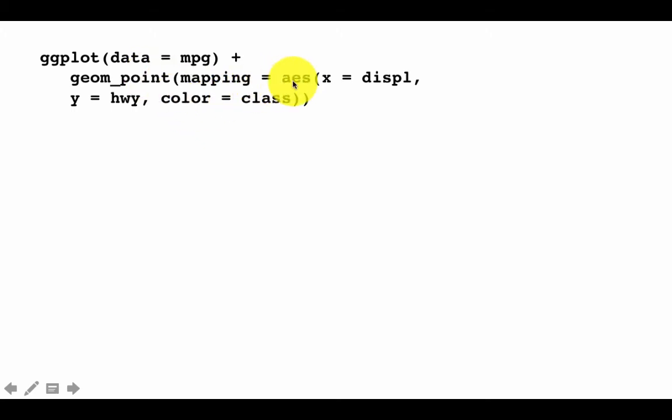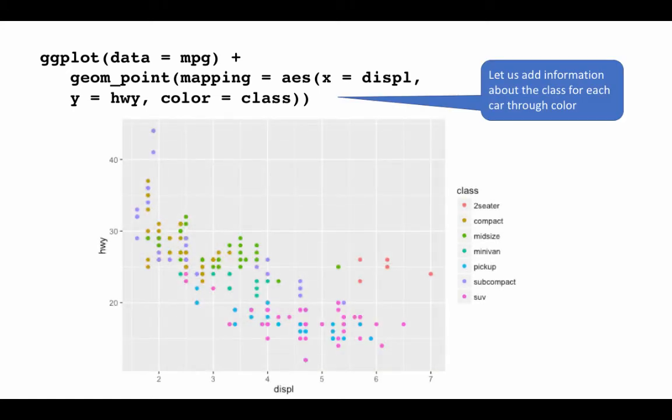So what we are saying here is, geom point, we have the aesthetics. We said x is displacement, y is highway. But for every point, let's give it a different color depending upon its class. So class consists of things like two-seater, four-seater, et cetera. What class of car it is, compact, things like that. Well, what if we put a different color for each class? So that way, we are adding one more variable onto our two-dimensional plot.